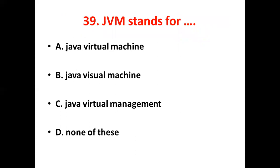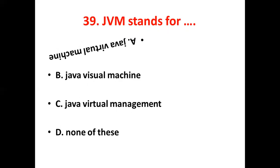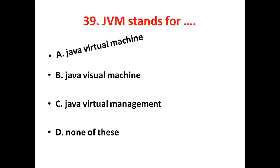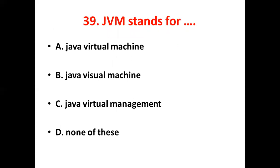39th bit: JVM stands for dash. Option A, Java Virtual Machine. Option B, Java Visual Machine. Option C, Java Visual Management. Option D, None of these. The answer is Option A, Java Virtual Machine.